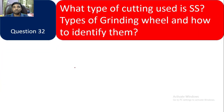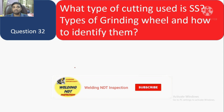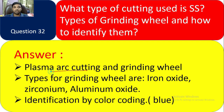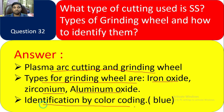Question 32: What type of cutting is used in stainless steel, what type of grinding wheel is used, and how do you identify them? Answer: Plasma arc cutting is required for stainless steel. Types of grinding wheels are iron oxide, zirconium, and aluminium oxide for cutting use in SS. Identification is by color coding — the color should be blue.